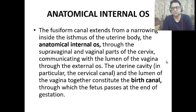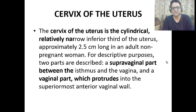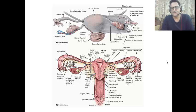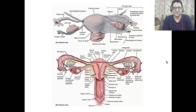The birth canal is basically the cervical canal and the lumen of the vagina. This is the canal through which the fetus passes during spontaneous vaginal delivery, known as SVD.